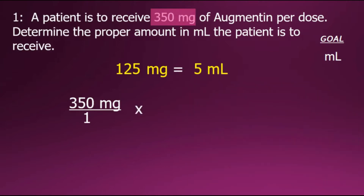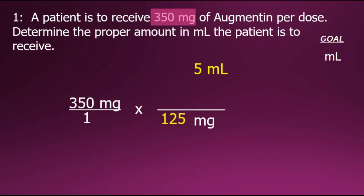To set up our conversion fraction, we will want milligrams in the denominator so that it cancels out. Placing these equivalent values in the numerator and the denominator gives us a fraction with a value of one, allowing us to convert the units. We'll cancel out the common milligrams in the numerator and the denominator since they equal one.